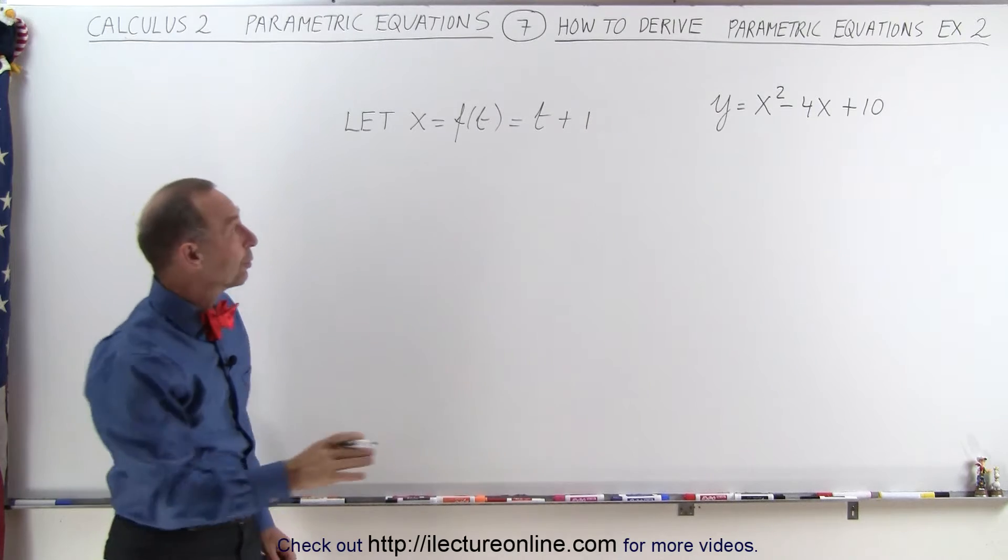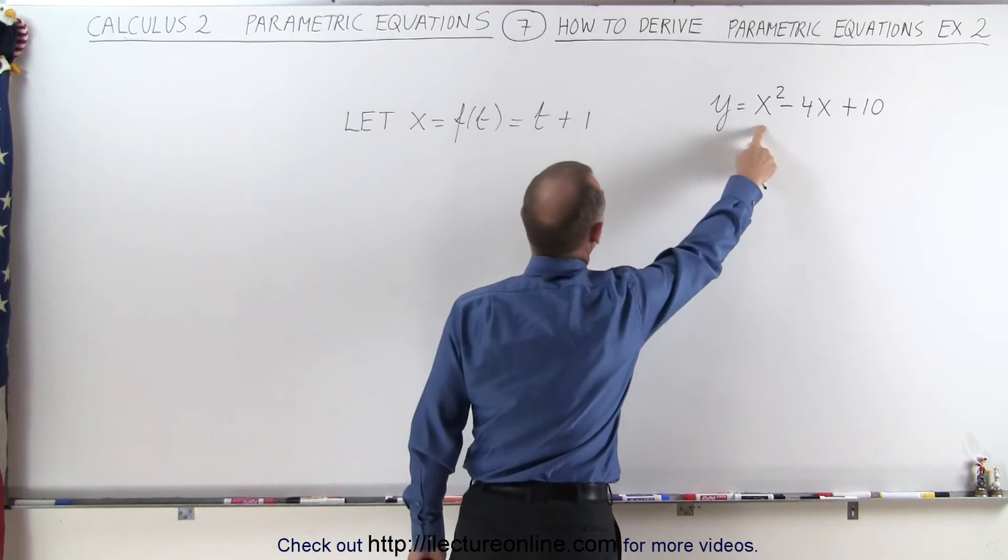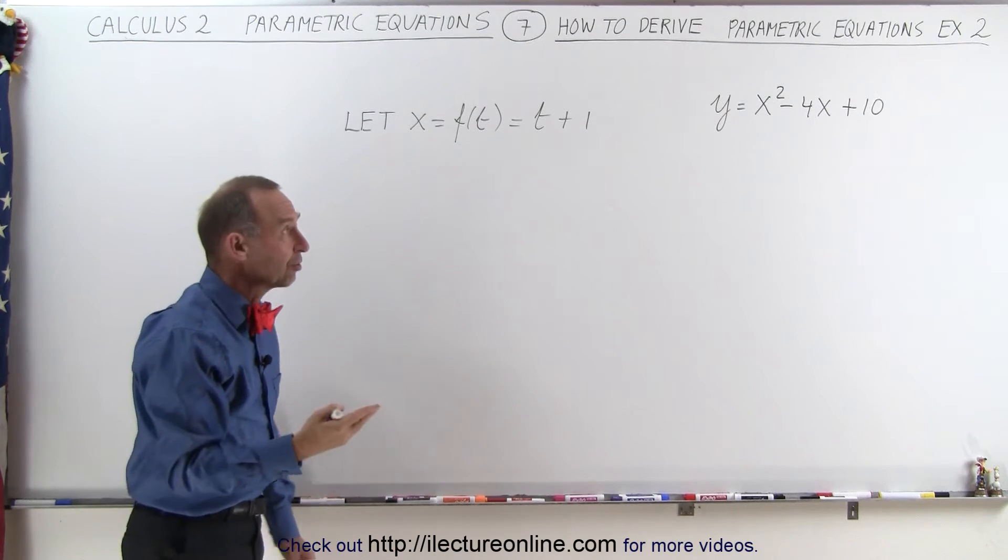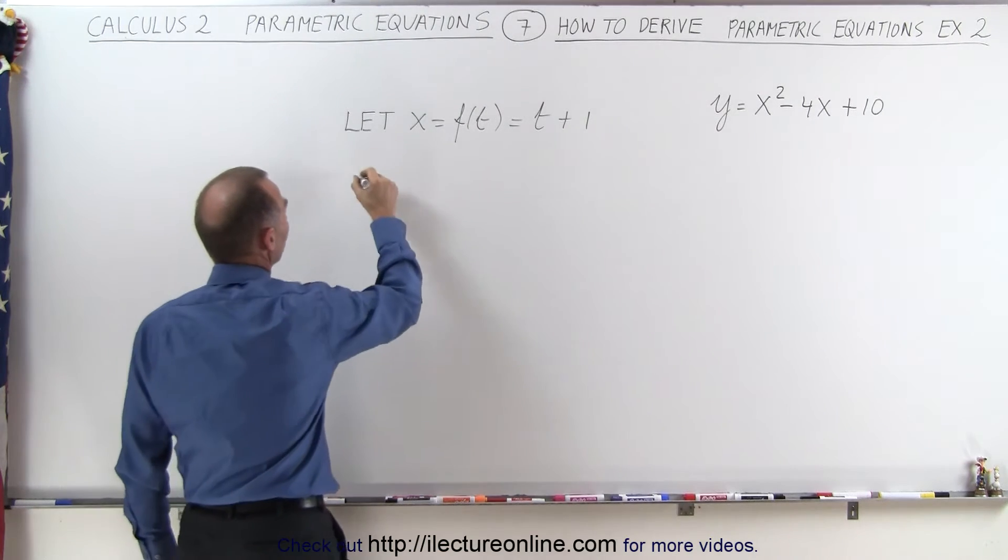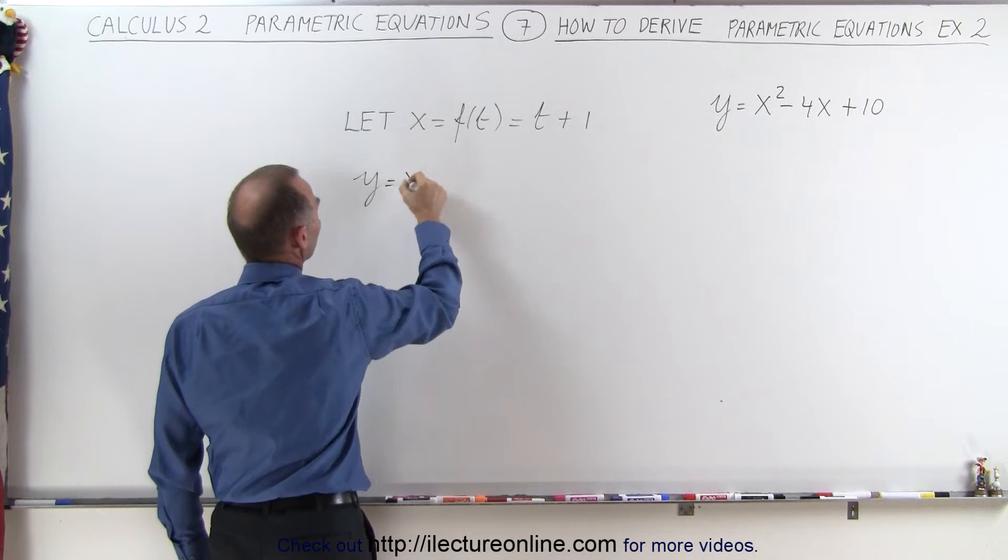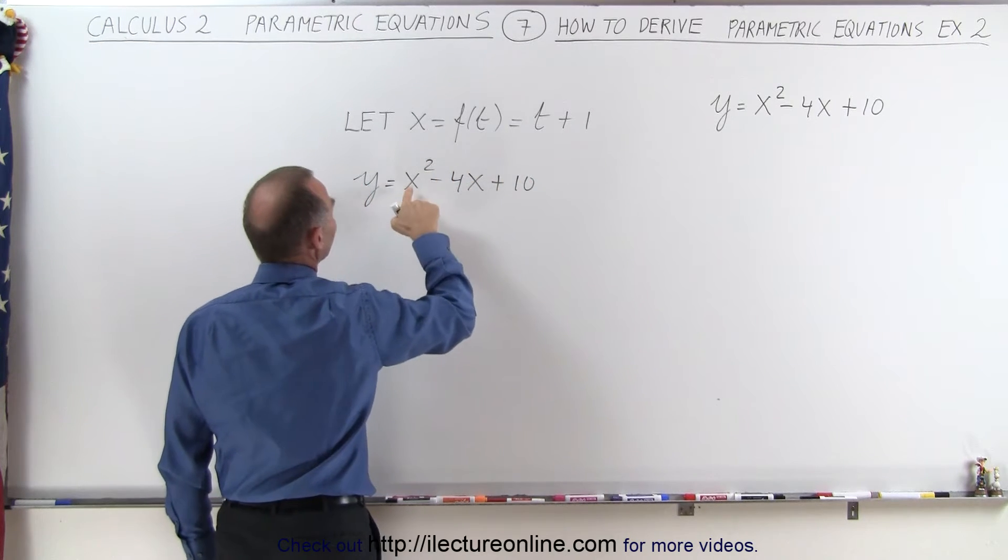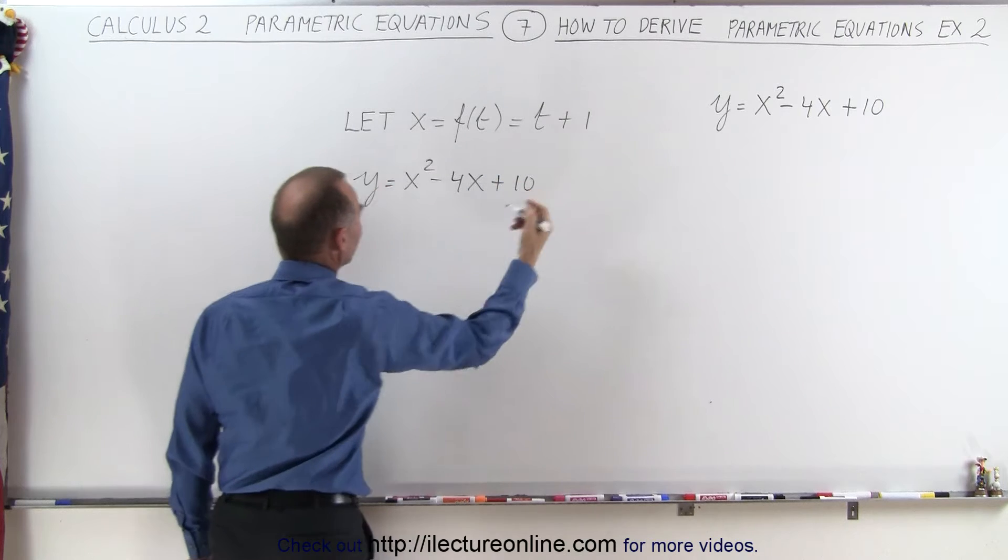So now what we're going to do is plug in, for every x, we're going to plug in t plus 1 to find the corresponding parametric equation in terms of y. Since y is equal to x squared minus 4x plus 10, we're going to replace every x by t plus 1 to see what we get.